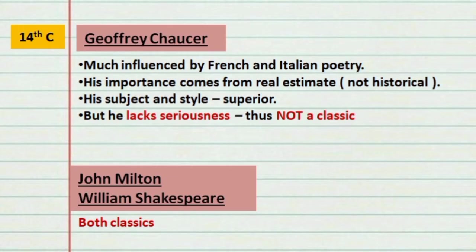Arnold begins by analyzing some great poets and deciding whether they are classics. He begins with Geoffrey Chaucer, the 14th-century writer called the father of English literature and poetry. Chaucer was greatly influenced by French and Italian poetry. According to Arnold, his importance comes from a real estimate — his subject and style are superior. But what he lacks is the high seriousness required for great poetry. Thus, Arnold does not classify Chaucer as a classic.